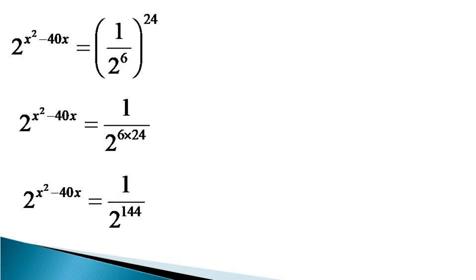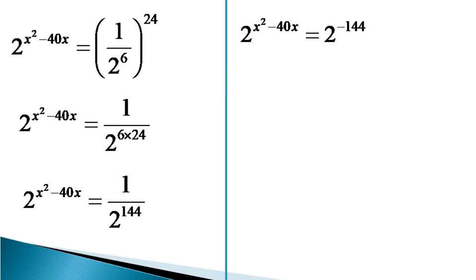We bring 2 from the denominator to the numerator on the right hand side, so the expression becomes 2 raised to the power x squared minus 40x is equal to 2 raised to the power minus 144. Since the bases on both sides of the equal sign are equal, the indices must also be equal.